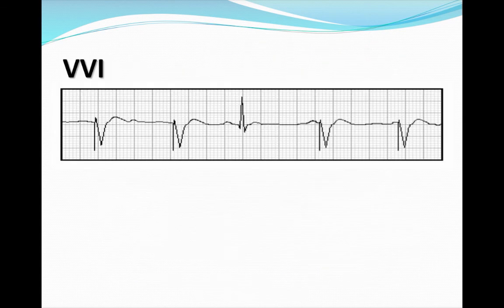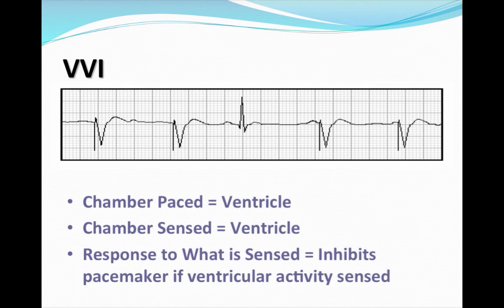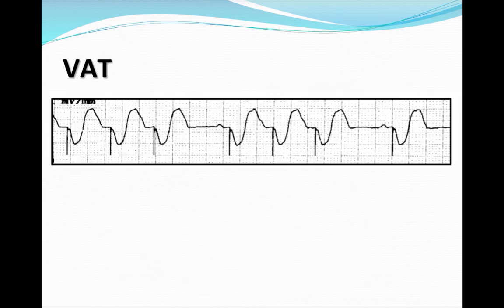Let's do some practice. VVI — the chamber being paced is the ventricle, the chamber being sensed is the ventricle, and the response is inhibit. So the pacemaker does not send an impulse when it sees the patient has their own beat. As you can see, the third beat is the patient's own beat and no pacer spike was delivered.